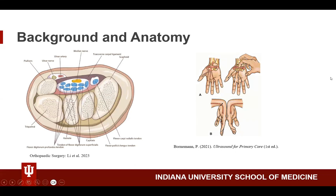The anatomy of the carpal tunnel is depicted here, where the transverse carpal ligament or the flexor retinaculum forms the superior border of the carpal tunnel. In the carpal tunnel, we have a lot of tendons along with the median nerve. In carpal tunnel syndrome, this nerve either gets compressed or inflamed such that there's some inflammation around it.